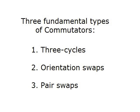There are three fundamental types of commutators: three cycles, orientation swaps, and pair swaps. Three cycles are the easiest to understand, as well as by far the most common and most useful type of commutator. Because of this, I'm going to almost exclusively cover three cycles in this video, although I will introduce the other two types to show how they work.